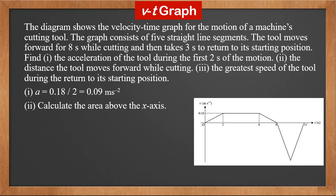Second, the distance moving forward is the area above the x-axis. It's a trapezium, so the area — or the distance — is (4 plus 8) times 0.18 over 2, which is 1.08 meters.